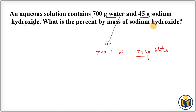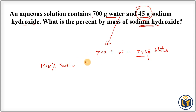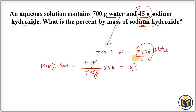The question asks for the percent by mass of sodium hydroxide. Applying the formula: mass percentage of NaOH = 45 grams divided by 745 grams, multiplied by 100. The gram units cancel, and the result is approximately 6%. This means sodium hydroxide is present at 6% in the solution. To find the mass percentage of water (the solvent), subtract 6 from 100, giving 94%.